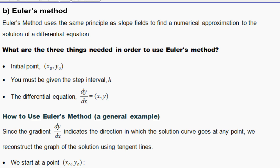Euler's method uses the same principle as slope fields to find a numerical approximation to the solution of a differential equation. There are three things needed in order to use Euler's method: one, you need the initial point; you also must be given a step interval; and a differential equation.